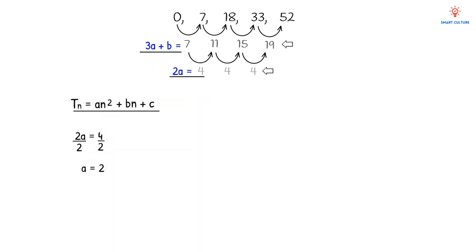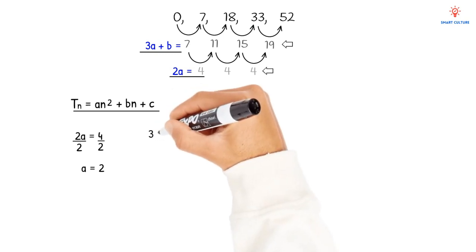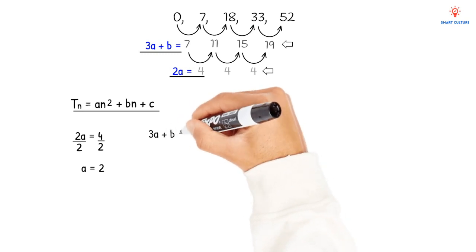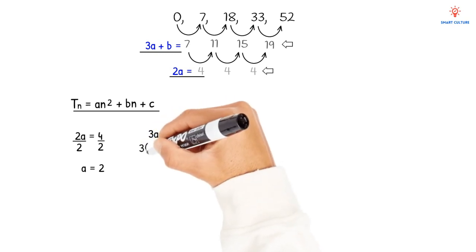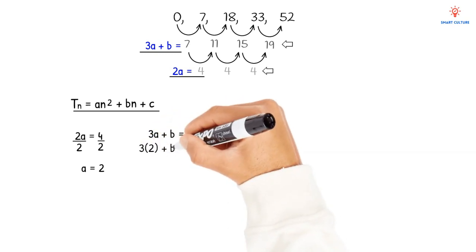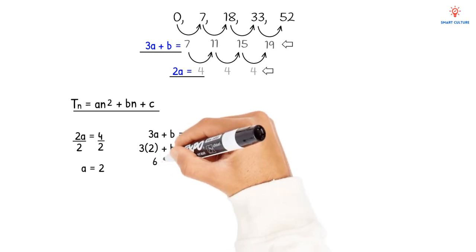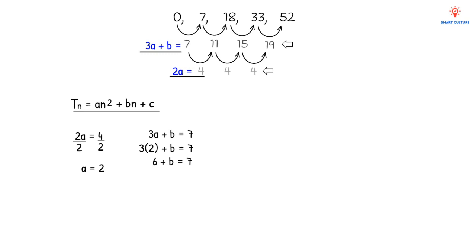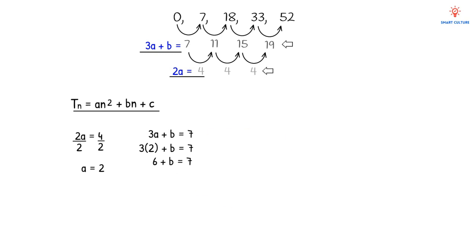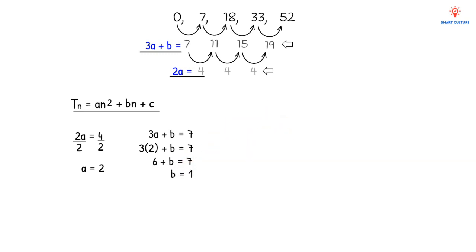Now we take the value of a and use it with the line of first differences. We have 3a + b = 7, and since a = 2, we substitute: 3 × 2 + b = 7, giving 6 + b = 7. Moving 6 to the other side, b = 1.